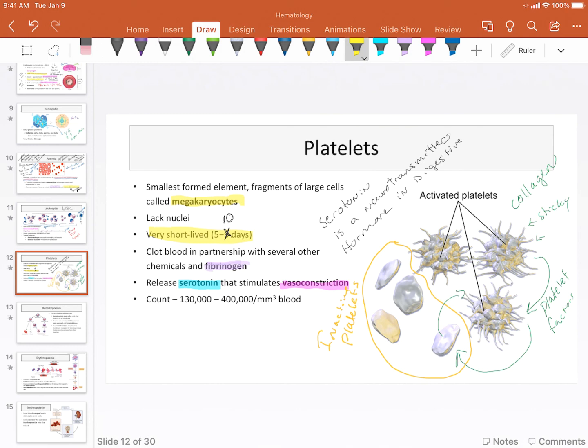Average count. Like so. And those are basically platelets. Nothing much more to talk about there. We're going to talk about them when we talk about blood clotting, but I'm not ready to talk about blood clotting yet.